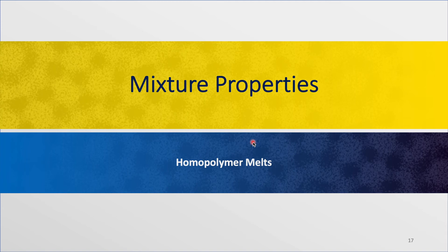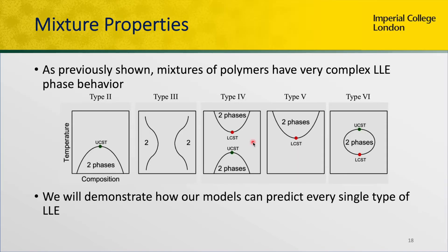Not only in terms of homopolymer melts can we characterize these polymers well — we can also look at mixture properties, which are particularly challenging because polymers exhibit a wide range of miscibility behaviour in solvents and blends. One case is the upper critical solution temperature behaviour, where we increase the temperature and get miscibility. The opposite is where we increase temperature and get immiscibility, and we have cases in between as well. We'll demonstrate a few examples where we have excellent correspondence between the simulations, the equation of states, and experimental data.